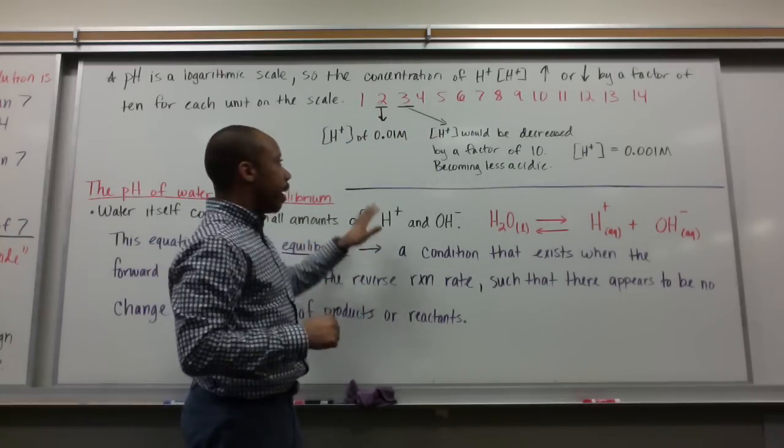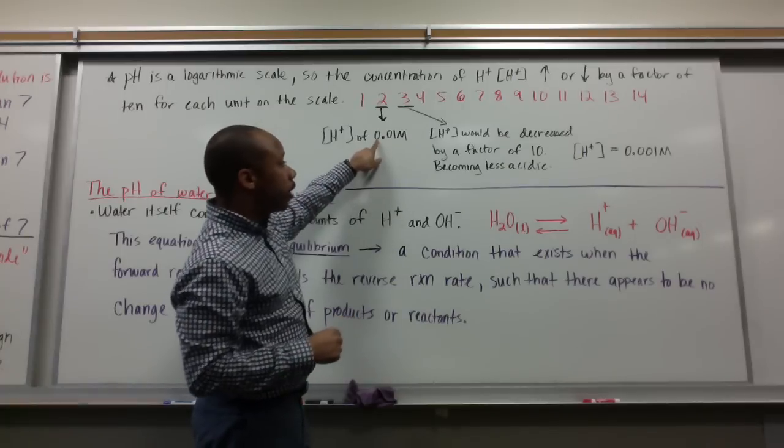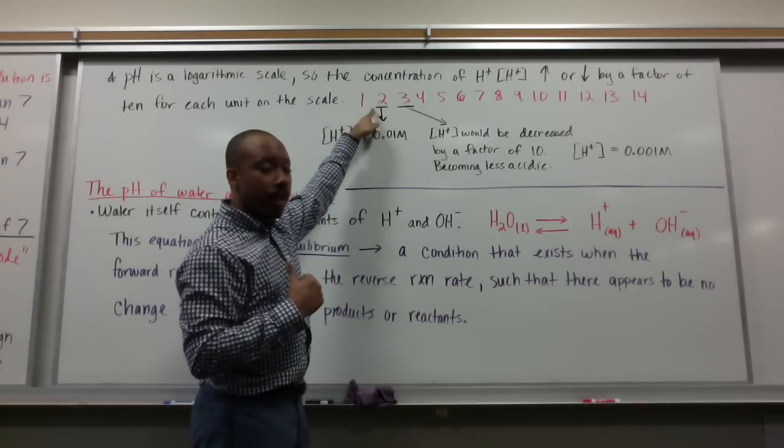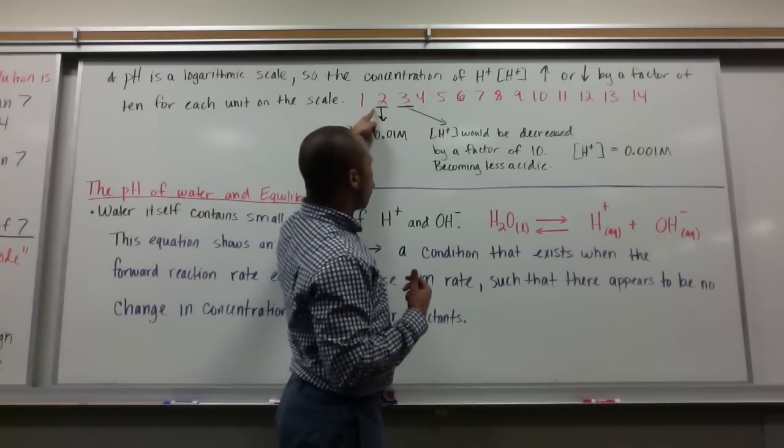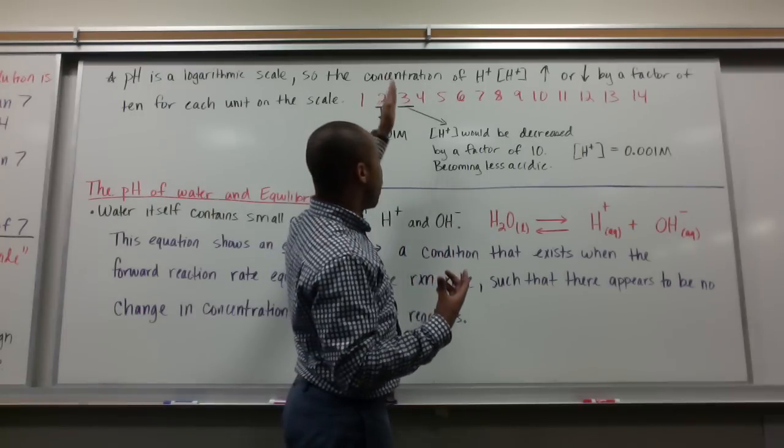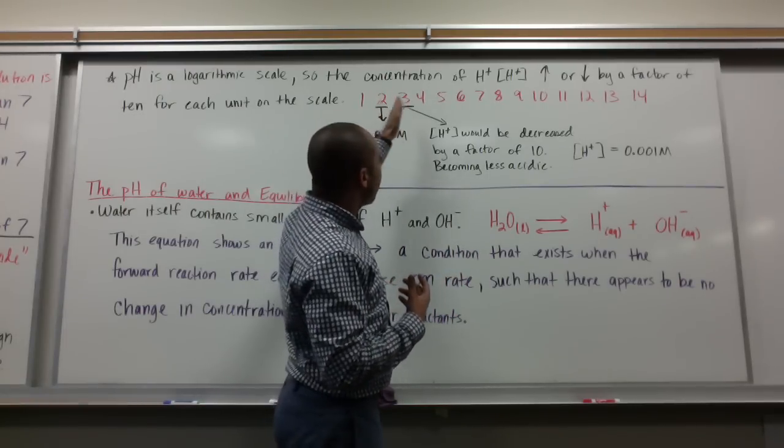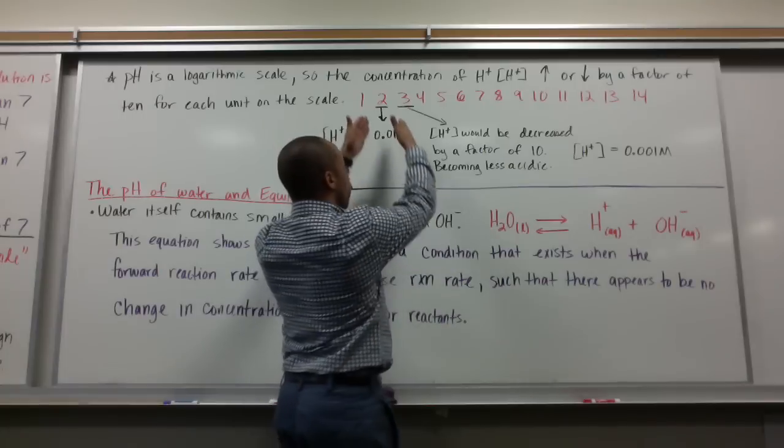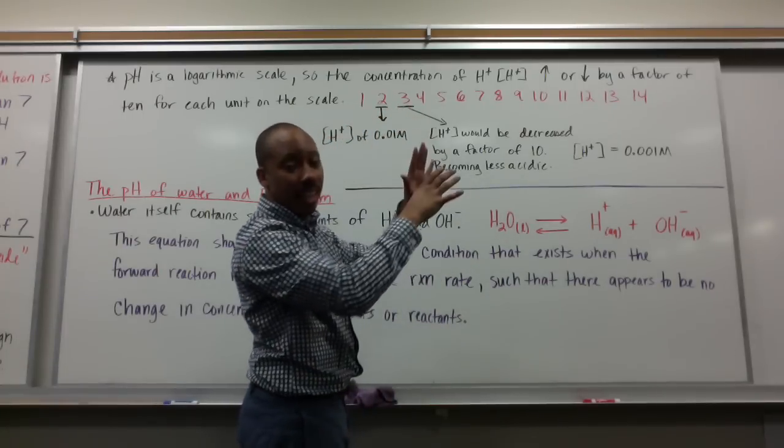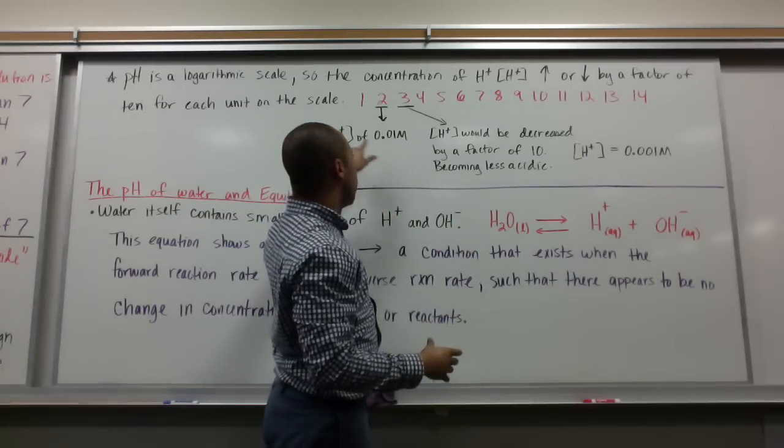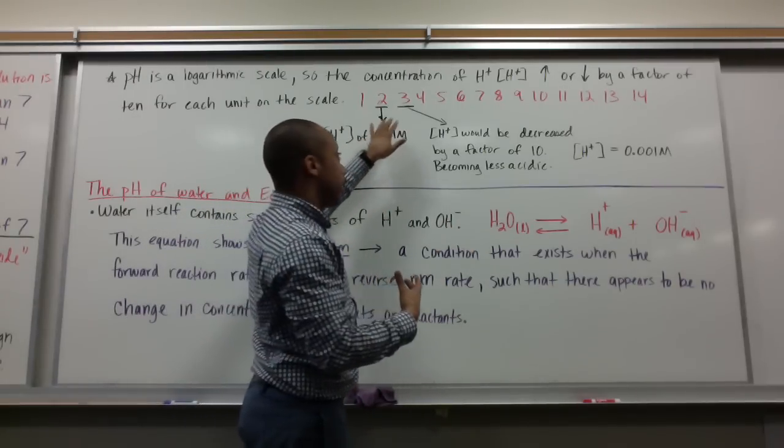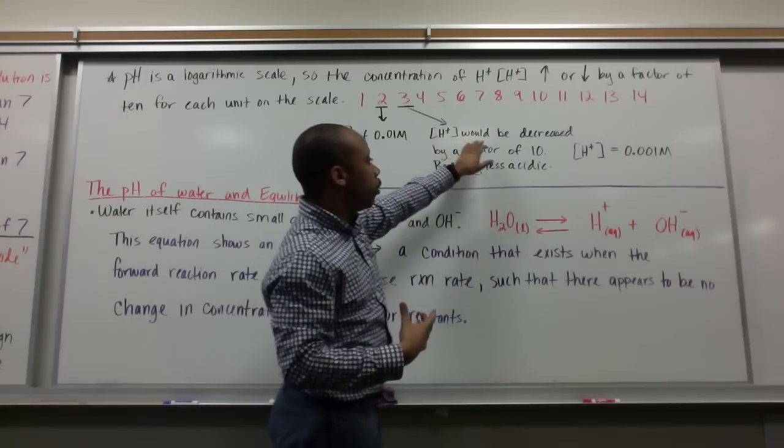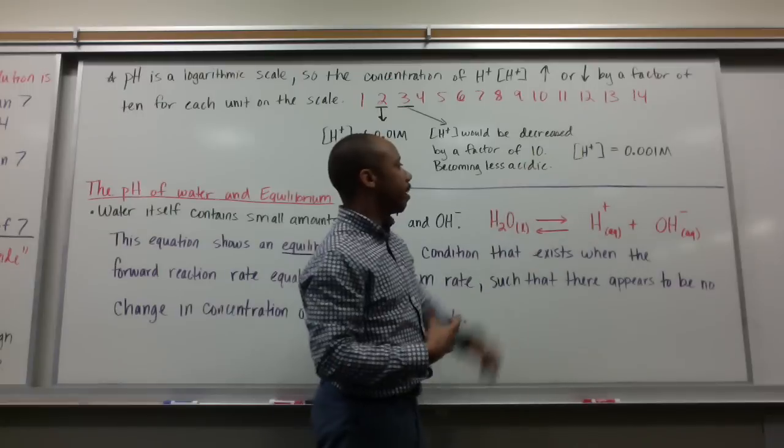We just calculated that a solution with 0.01 molar concentration had a pH of 2. Now say I want to know the hydrogen ion concentration of something with pH of 3. One step on the logarithmic or pH scale is a factor of 10. When we go from 2 to 3, we're becoming less acidic, so we're going to have less H plus ions. Our hydrogen ion concentration would decrease by a factor of 10.